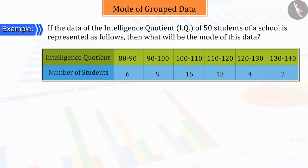The intelligence quotient, i.e., IQ of 50 students of a school are represented as below. So, can you tell what will be the mode of the given figures?